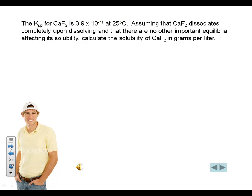The equation for the dissociation of calcium fluoride shows a 1 to 2 ratio between calcium and fluoride ions. We can use this ratio to set up a Ksp expression.